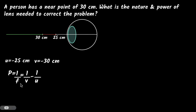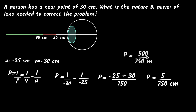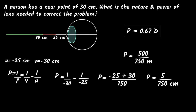Substituting into the lens formula: V is minus 30 and U is minus 25, so I get one over minus 30 minus one over minus 25, in centimeters. Taking the common denominator and simplifying, I get 5 divided by 750 centimeters. Converting to meters by dividing by 100 gives 500 divided by 750, which is about positive 0.67 diopters. The positive sign means I need a converging lens, and that makes sense. If you can't see things close by, you need help increasing the power, and you increase the power by adding a converging lens. So you need a converging lens of 0.67 diopters.